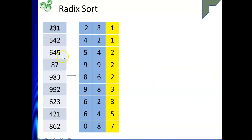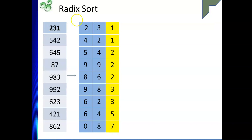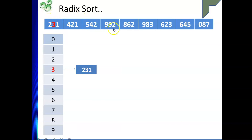So after the first pass we get the numbers sorted by their least significant digit. This sorted sequence, from 231 through to 087, now becomes our input for the next pass. Please remember that this sorted form is our input for the second digit pass.